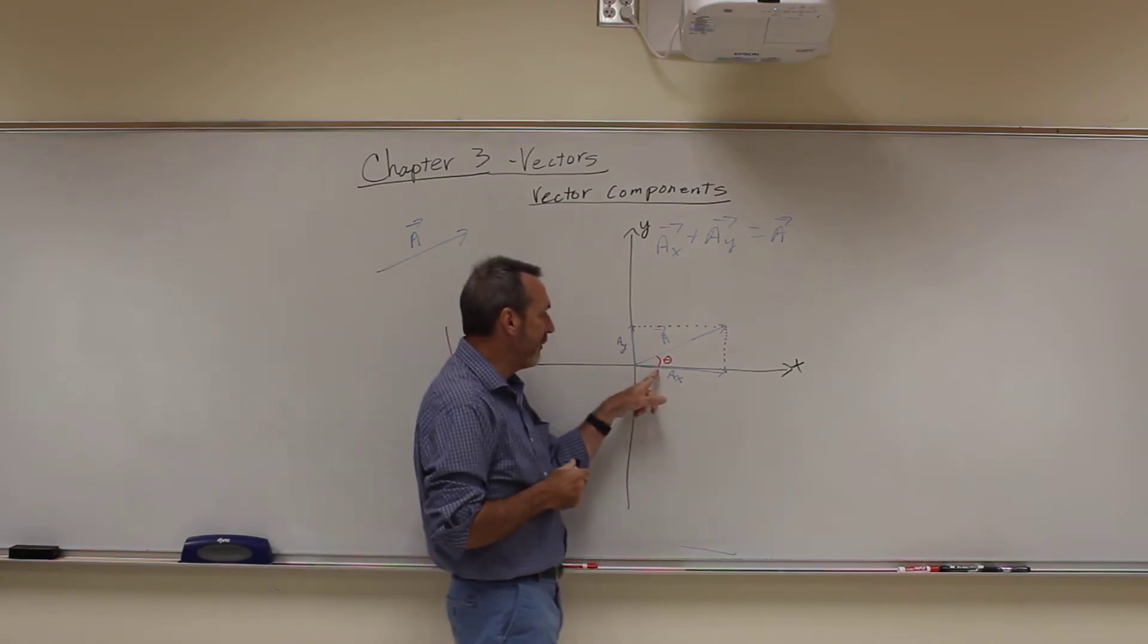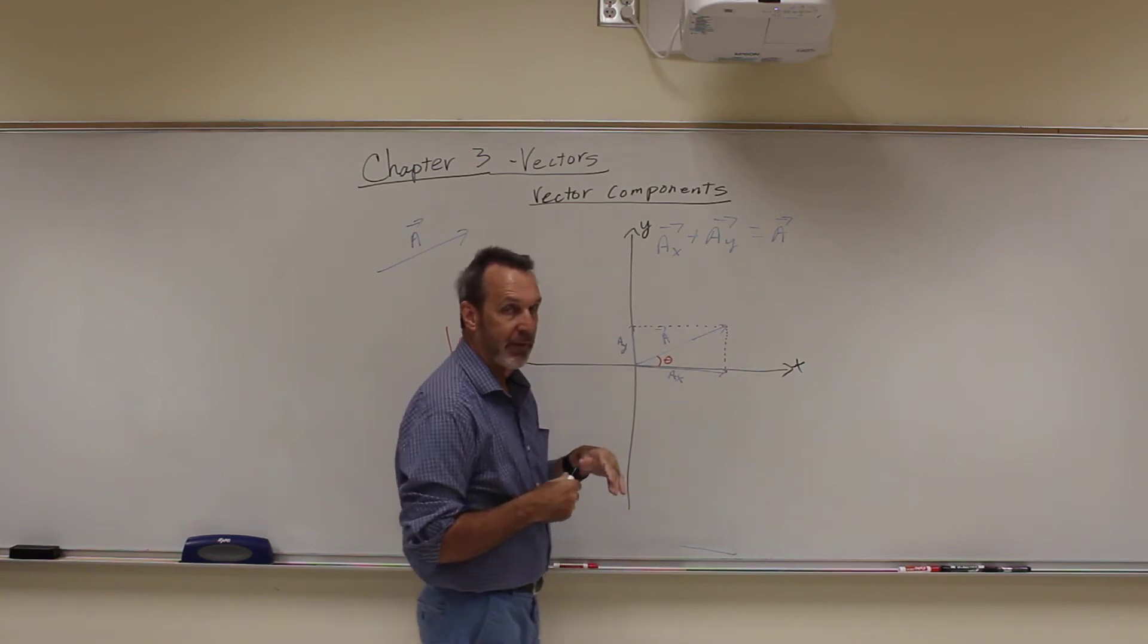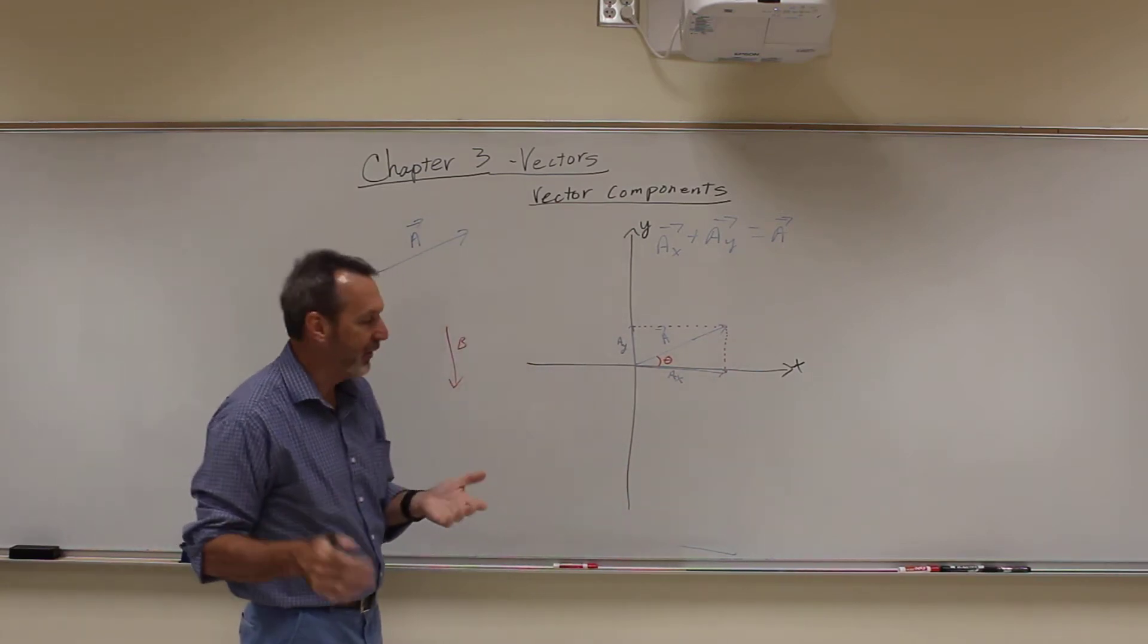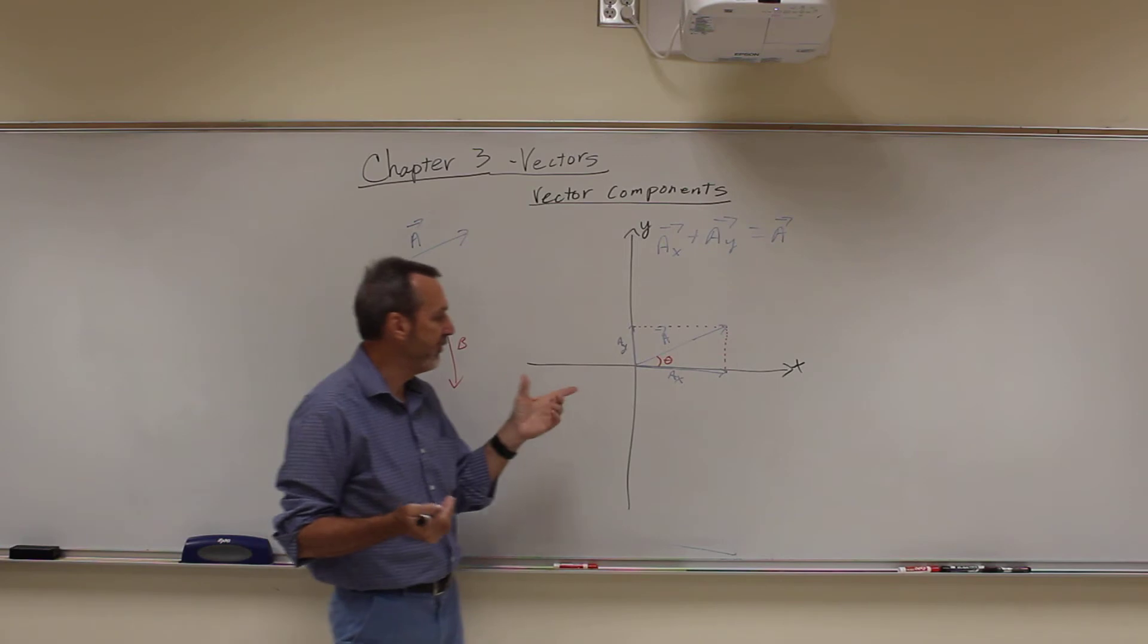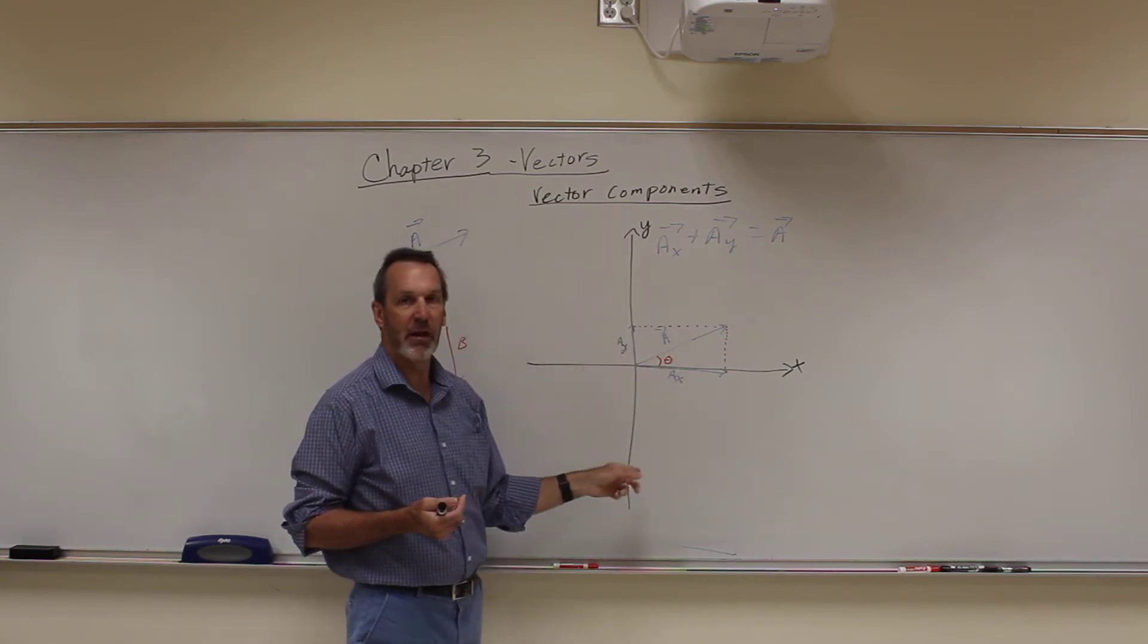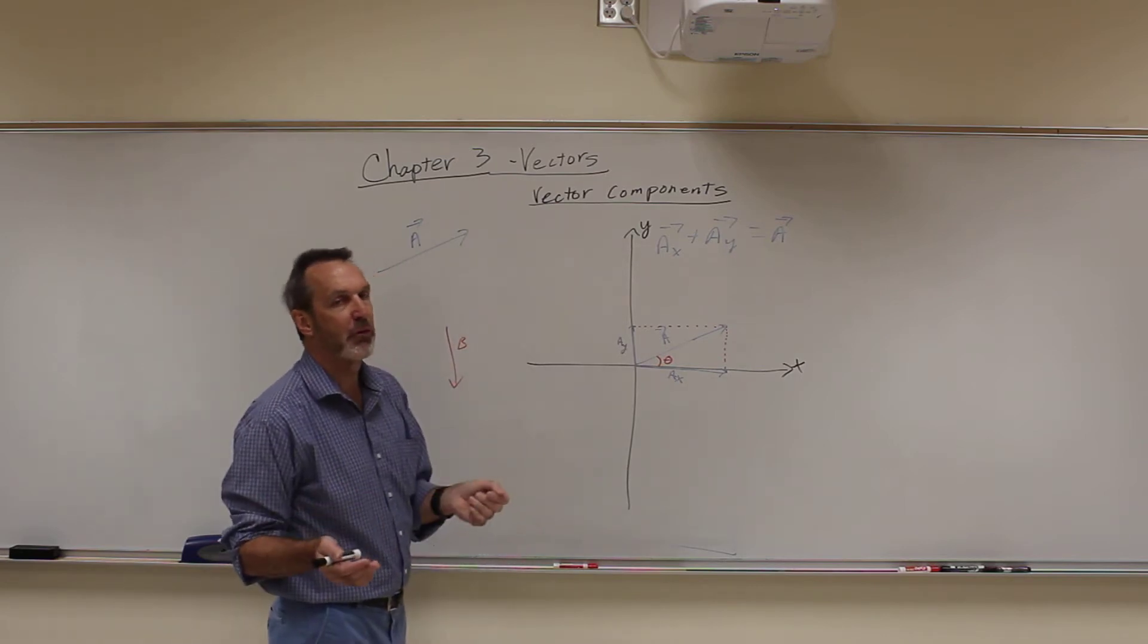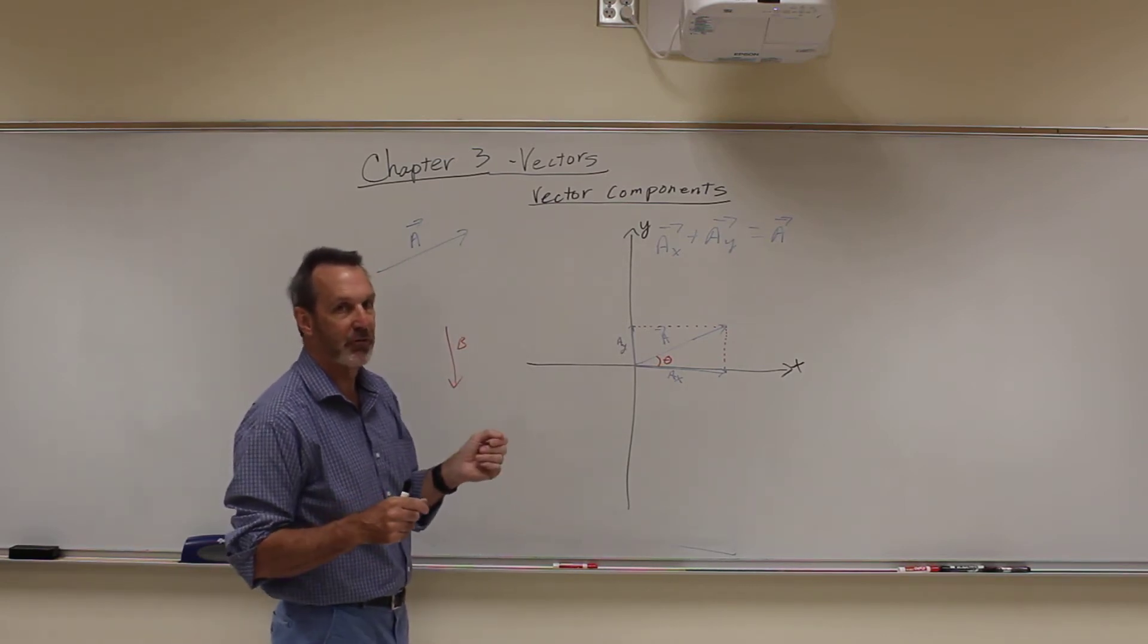So in this case, I'm going to use the angle theta here. It's the angle between the X axis and the vector. That will not always be the case. Now I know in math classes, you're used to always having the angle always start from the positive X and always go in counter-clockwise. Physics, we don't do that. Our angle can be anywhere. You just have to refer to it and tell people where it is so they can find it.